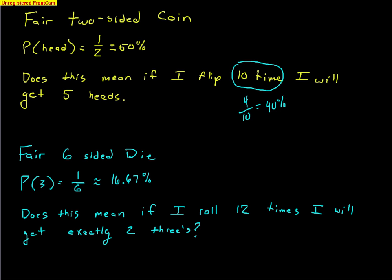If I were to flip 100, 200, 300, or 1,000 coins, I would start to see the truth of 50% being heads and 50% being tails — but it happens in the long run, not the short run. Same thing with rolling a die: the probability of rolling a 3 is 1 out of 6, because 1 out of the 6 sides is a 3 — about 16.67%. Rolling 12 times and getting exactly 2 threes? That's the short run. You'll see the true probability of 1/6 only after rolling many, many times — 1,000, 2,000, 10,000 times — and that's the idea of probability.